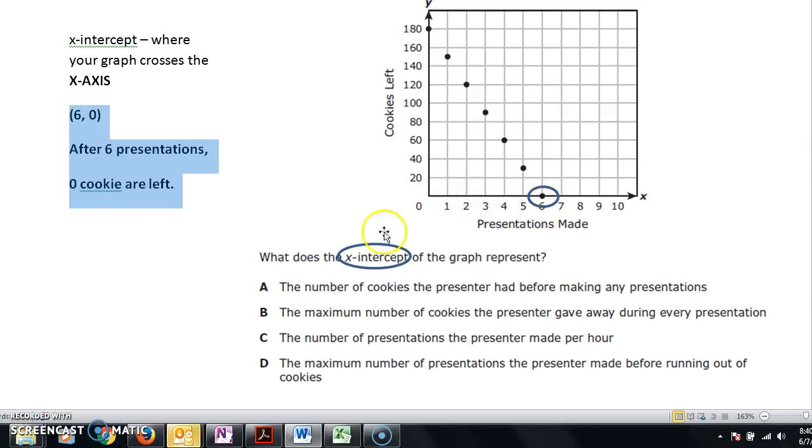It's not before they made any presentations. The maximum number of cookies the presenter gave away during every presentation. Remember that the x-intercept stands for 6, 0, which means after 6 presentations, 0 cookies are left. That's not correct.